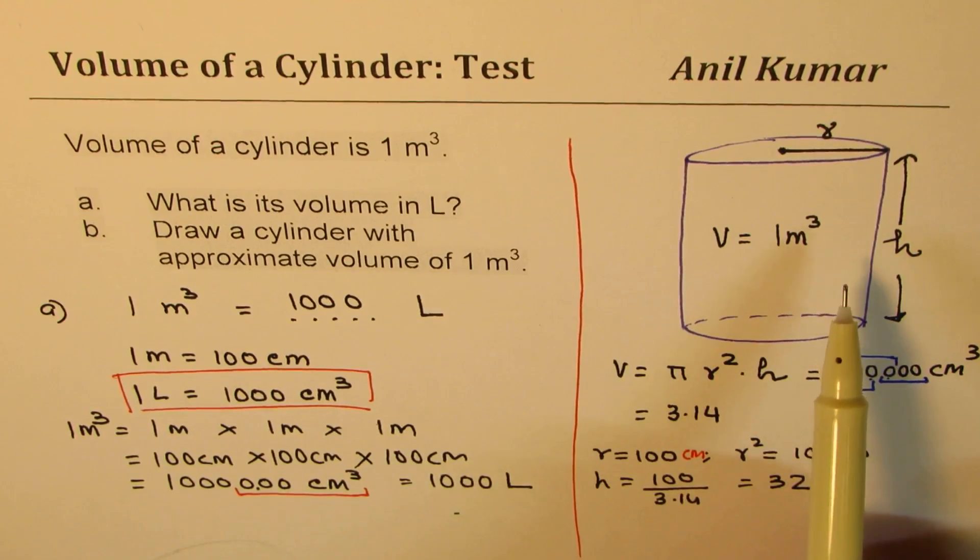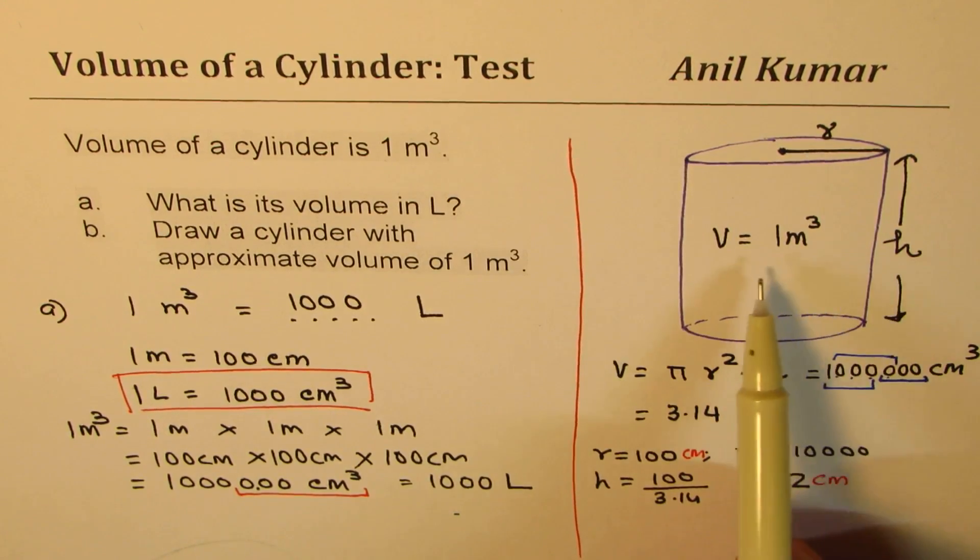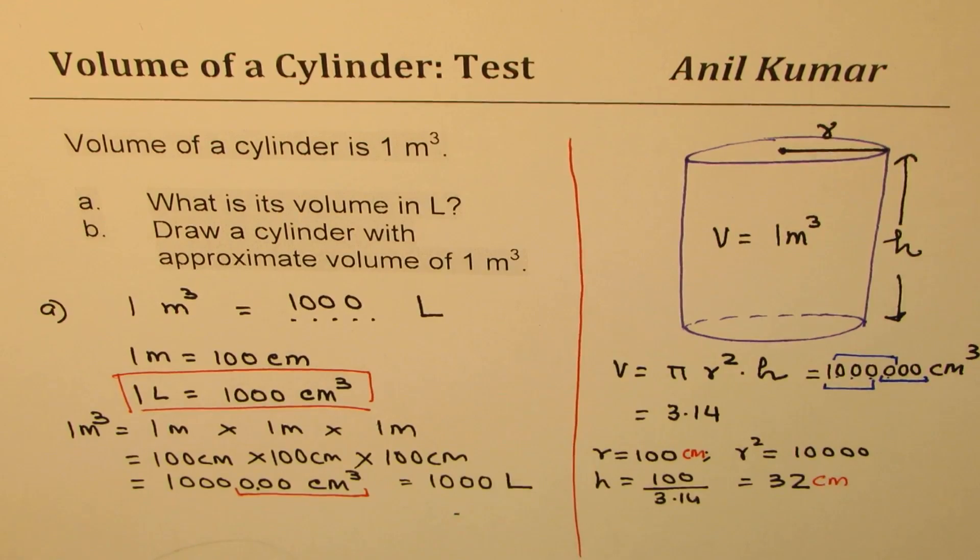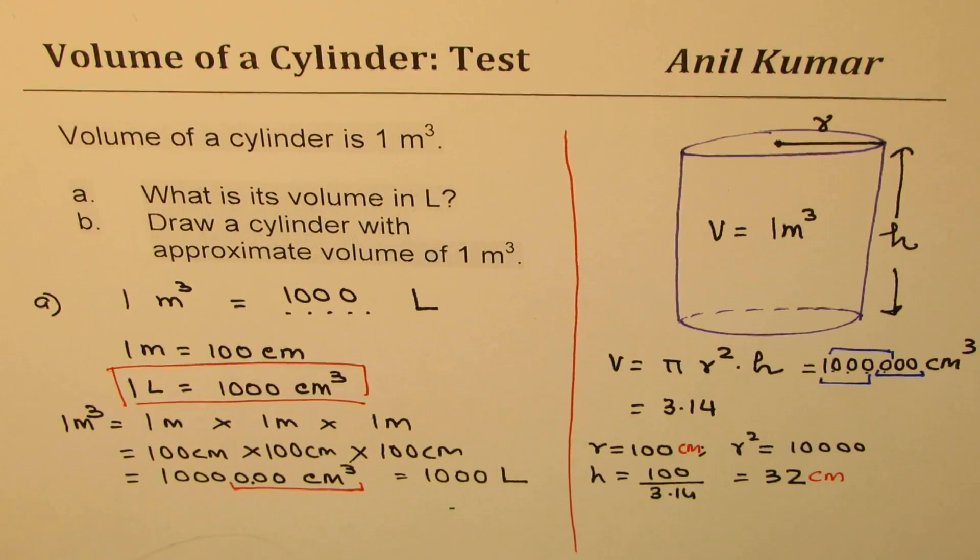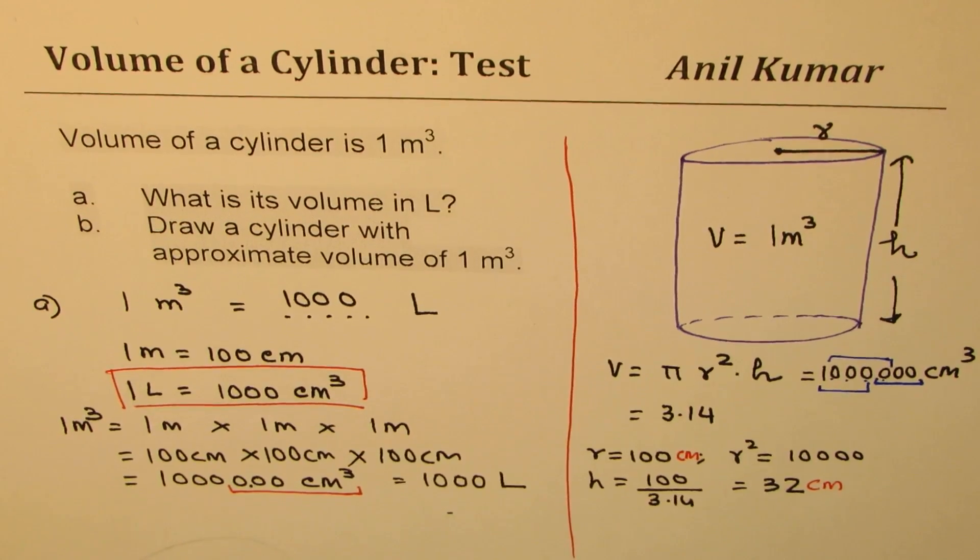But I'll leave this for you now. So you need to find other three, some three combinations. So find three combinations for radius and height so that we have a volume of one meter cube. Let this be an exercise for you. So I hope that helps. Thanks for watching. Feel free to write questions and your answers. Thank you.